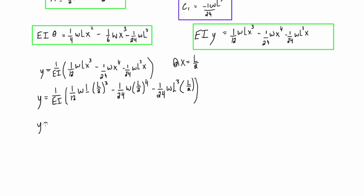So we'll get y is equal to one over ei, times, this will become one over 96, w, l to the power of four. This will be minus one over 384, w, l to the power of four, and minus one over 48, times w, l to the power of four. So we can simplify that, and we'll just get y is equal to one over ei, times negative five over 384, times w, l four.